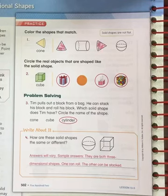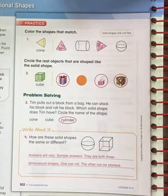Number four. How are these solid shapes the same or different? They are both three-dimensional shapes, but one can roll and one can be stacked. Sphere can roll. Cube can be stacked.